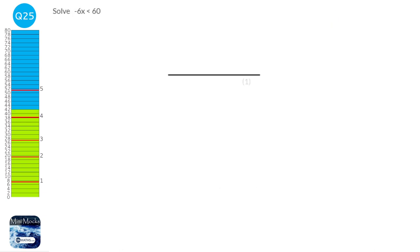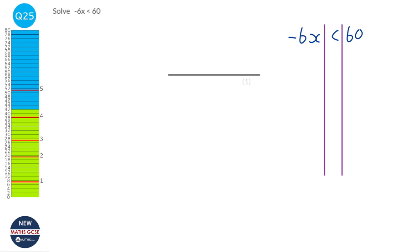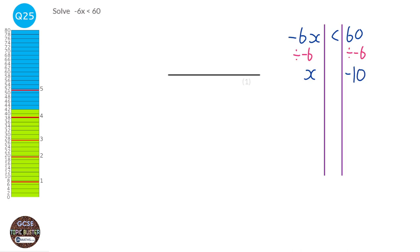We've got minus 6x is less than 60. We're going to divide both sides by minus 6 to get rid of it. That gets rid of the minus 6 on the left-hand side, and it's going to be 60 divided by minus 6, which will be minus 10. Now we've got to be really careful: whenever you times or divide both sides by a negative, you must switch the inequality. So instead of pointing to the left it's now going to point to the right. Our answer is x is greater than minus 10.